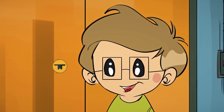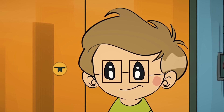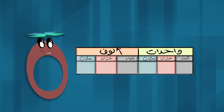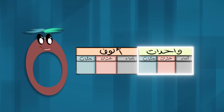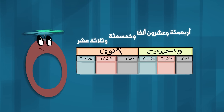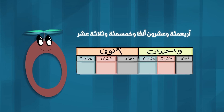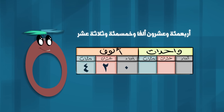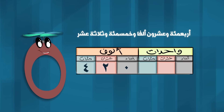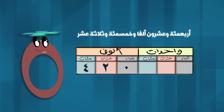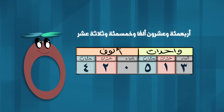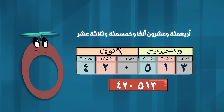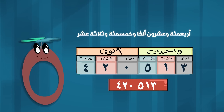مائة وخمسون ألفاً وسبعة وعشرون. لكتابة العدد نكتب من اليسار إلى اليمين، ونبدأ أولاً بقسم الألوف ثم الواحدات. فمثلاً العدد 420,513 يكتب في قسم الألوف أربعمائة وعشرون ثم نترك مسافة صغيرة ونكتب خمسمائة وثلاثة عشر في قسم الواحدات.